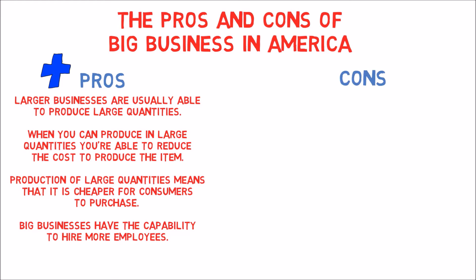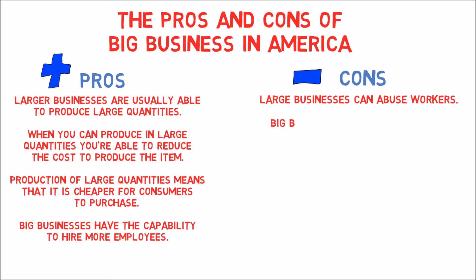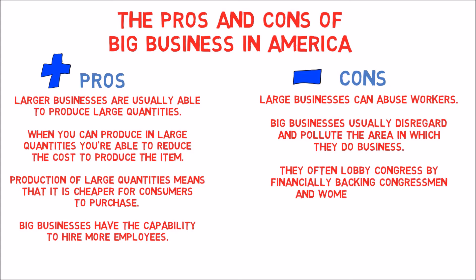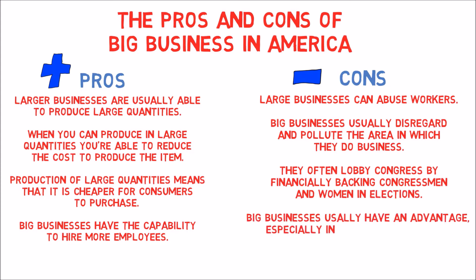The cons of Big Business: large businesses can abuse workers and usually disregard and pollute the area in which they do business. They often lobby Congress by financially backing congressmen and women in elections. Big businesses usually have an advantage in price and influence compared to small businesses.